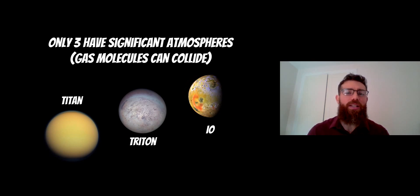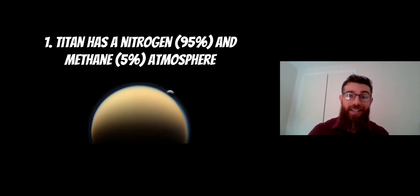The three that have a significant atmosphere are Titan, Triton, and Io—one around Saturn, one around Neptune, and one around Jupiter. Titan has the most significant atmosphere out of all of them. It has about 95% nitrogen and 5% methane atmosphere, and you can see from the images it's quite hazy. It's thick enough that we can't see the surface through it.